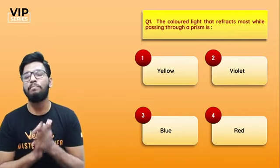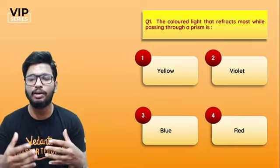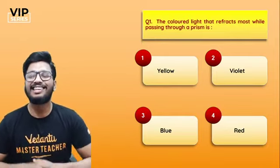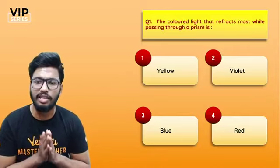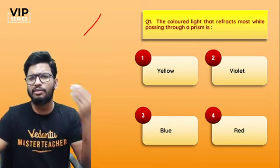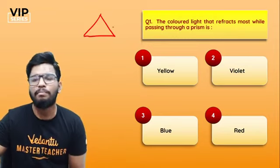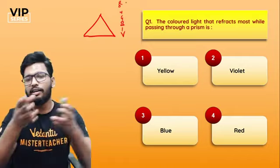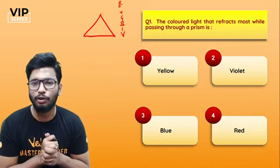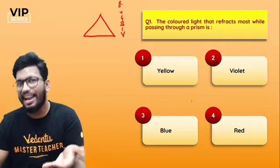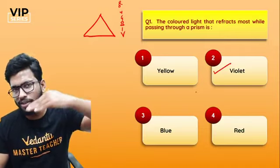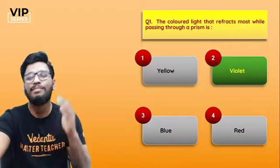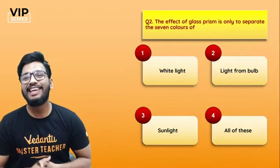First question: the colored light that refracts the most while passing through a prism — is it yellow, violet, blue, or red? When white light passes through a prism, it splits into seven prominent colors. Among all the colors, red refracts the least while violet refracts the most, and violet is always towards the base of the prism. So yes, violet is the right answer.